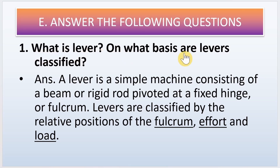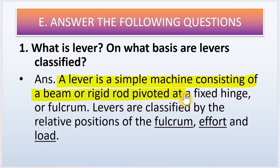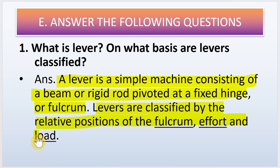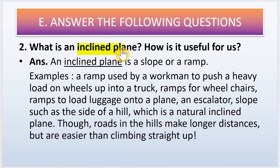Now the long answer questions. First: what is a lever and on what basis are levers classified? A lever is a simple machine consisting of a beam or rigid rod pivoted at a fixed hinge or fulcrum. Levers are classified by the relative positions of the fulcrum, effort, and load.